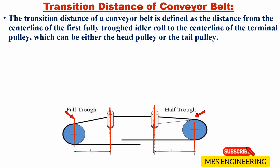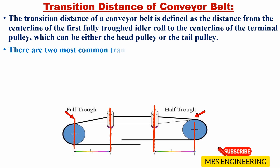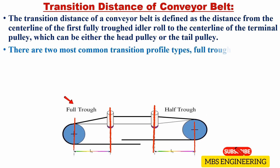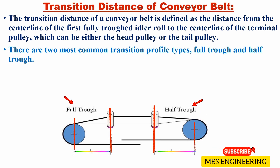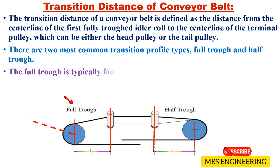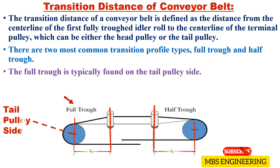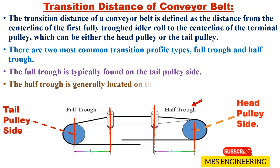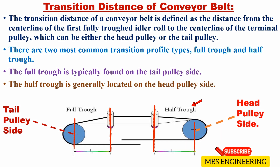There are two most common transition profile types: full trough and half trough. The full trough is typically found on the tail pulley side, and the half trough is generally located on the head pulley side.